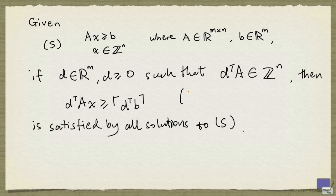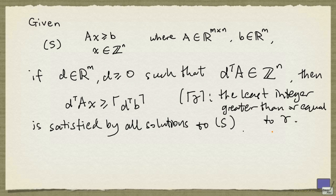Recall that the ceiling of a number gamma is the least integer greater than or equal to gamma. So, for example, the ceiling of 2.7 is 3, and the ceiling of negative 1.5 is negative 1. So, this inequality here is called a Chvátal-Gomory cutting plane.